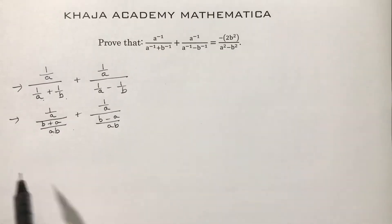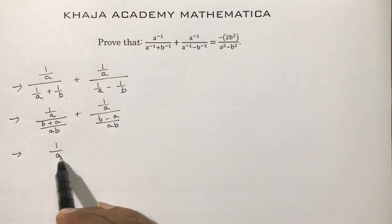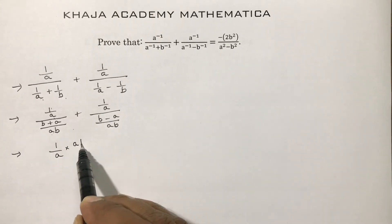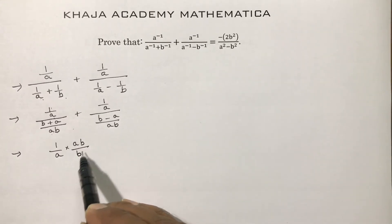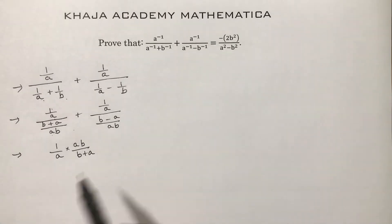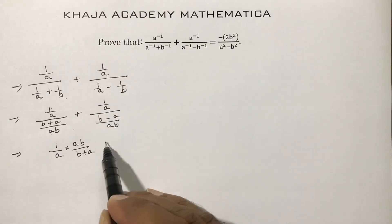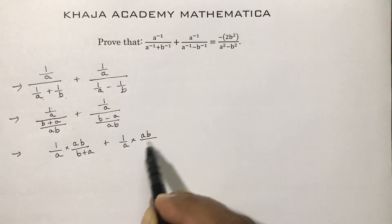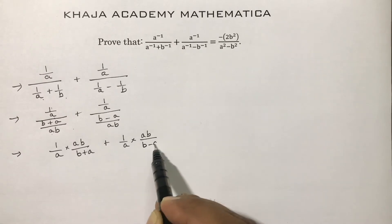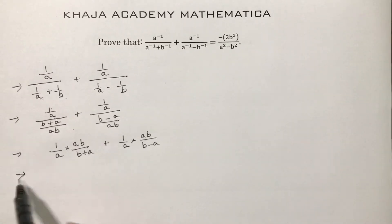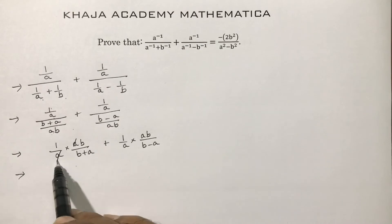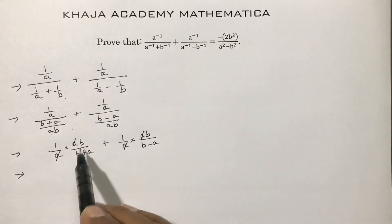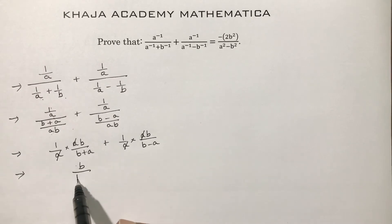Now taking reciprocals: 1/a times ab/(b + a), plus 1/a times ab/(b − a). Here a and a cancel in both terms, leaving b/(b + a) plus b/(b − a).